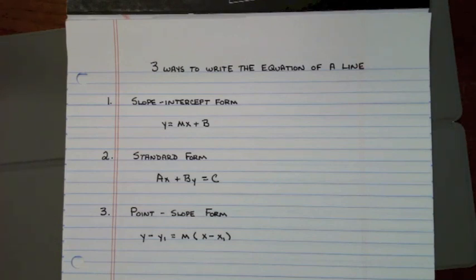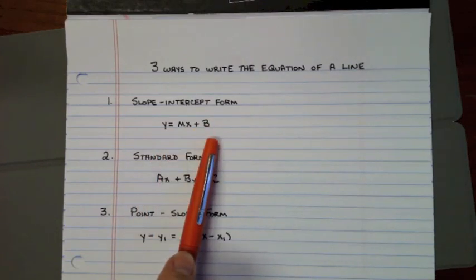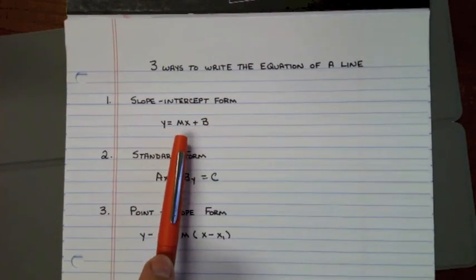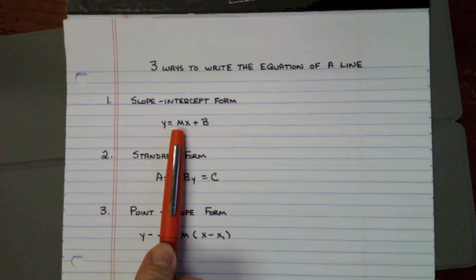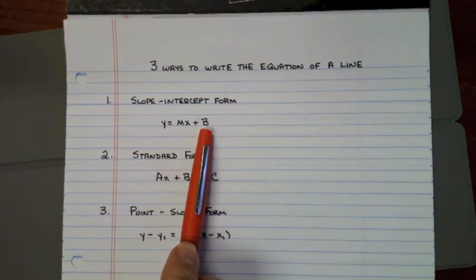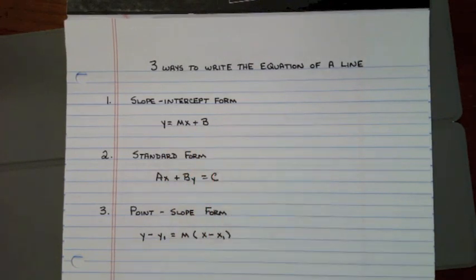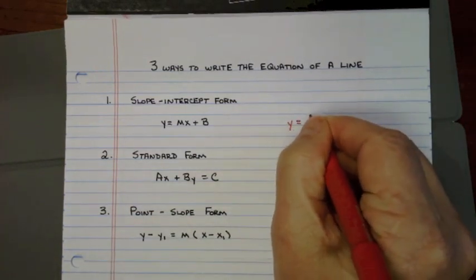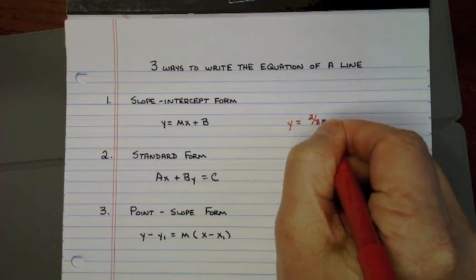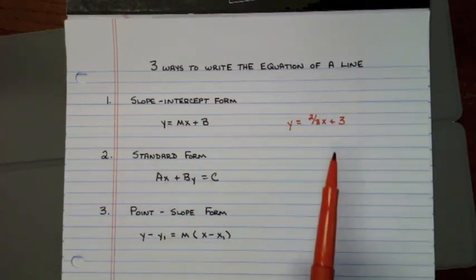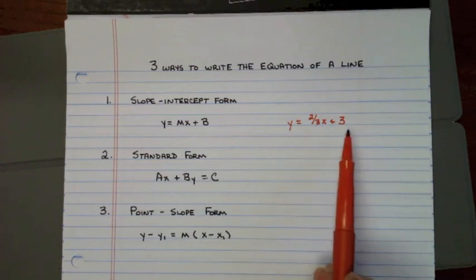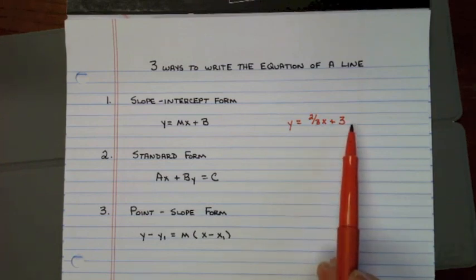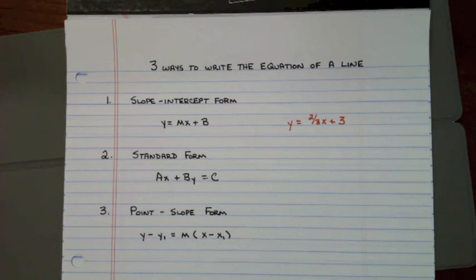We're also going to talk about the three other ways that you can write the equation of a line. The one we've already gone over is slope-intercept form, which looks like Y = mX + b, where M is the slope and B is the Y-intercept. An example in slope-intercept form would be Y = 2/3 X + 3, where 2/3 is your slope and 3 is your Y-intercept.